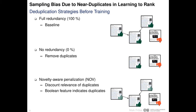During training, we compare three strategies to vary the degree of redundant Wikipedia articles. First, in the full redundancy strategy, we do not remove any near-duplicates as the baseline. In the no-redundancy strategy, we remove all non-canonical Wikipedia near-duplicates from the training set, so only canonical documents from each group remain. This strategy has the disadvantage of reducing training data size. To circumvent this, we use novelty-aware penalization as the third strategy: we add a boolean feature indicating whether a document is a duplicate, and adjust duplicate relevance labels so that relevant documents are ranked before relevant duplicates.